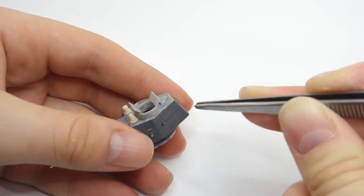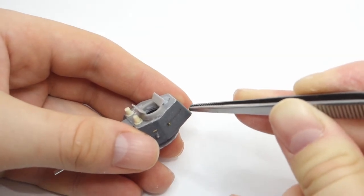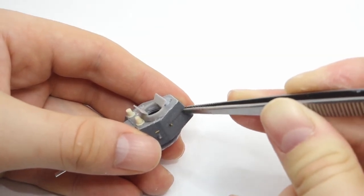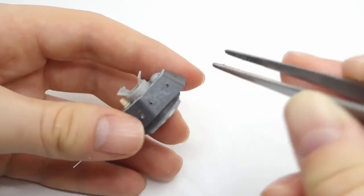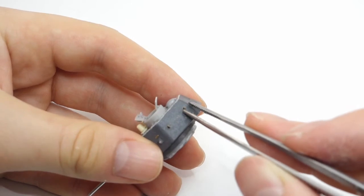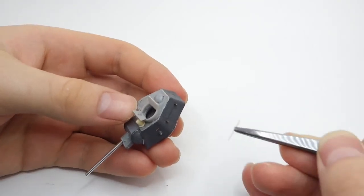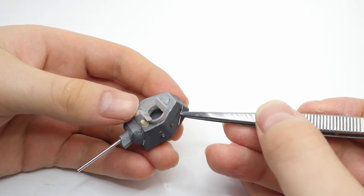The photo-etched detail set includes parts that allows me to create the early type of the grab handles. The last part which I need to add to finish those is the copper wire which I cut to correct length.